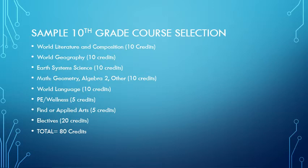World Language for 10 credits, P.E. and Wellness for 5 credits, Fine or Applied Arts for 5 credits, and Electives for the remaining 20 credits. You're looking at wanting to register for a total of 80 credits.